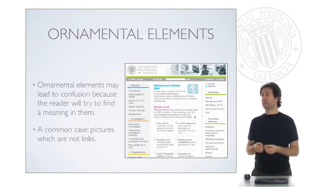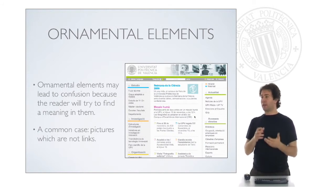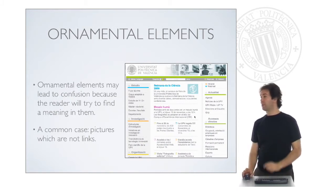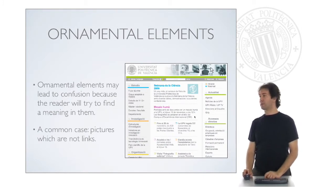Another example is when we have ornamental elements. Ornamental elements are decoration and decoration may lead to confusion because the reader will try to find a meaning in them. In this picture we have to be very careful. For example, this is a decoration, but this is not or not necessarily.